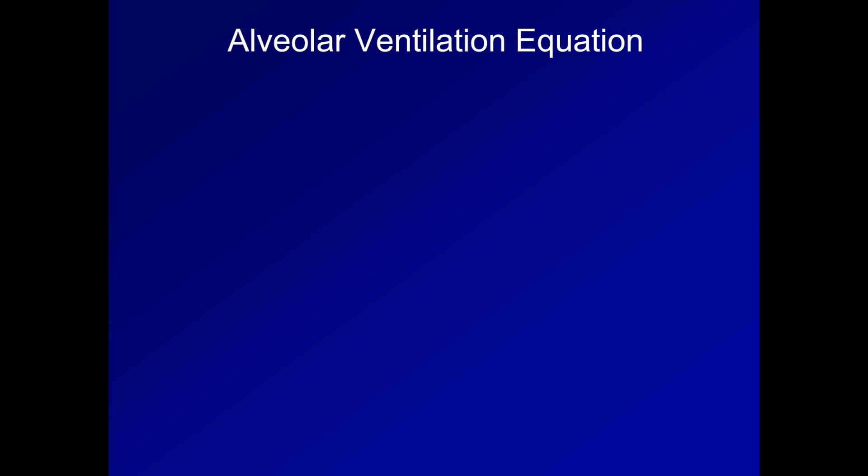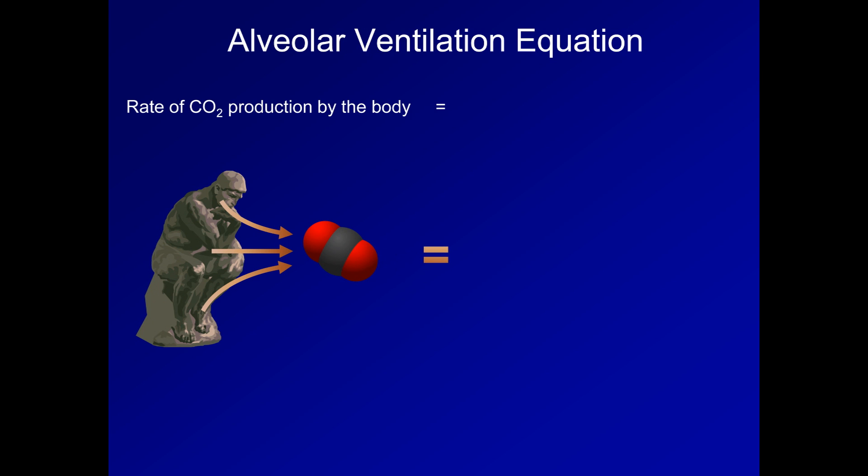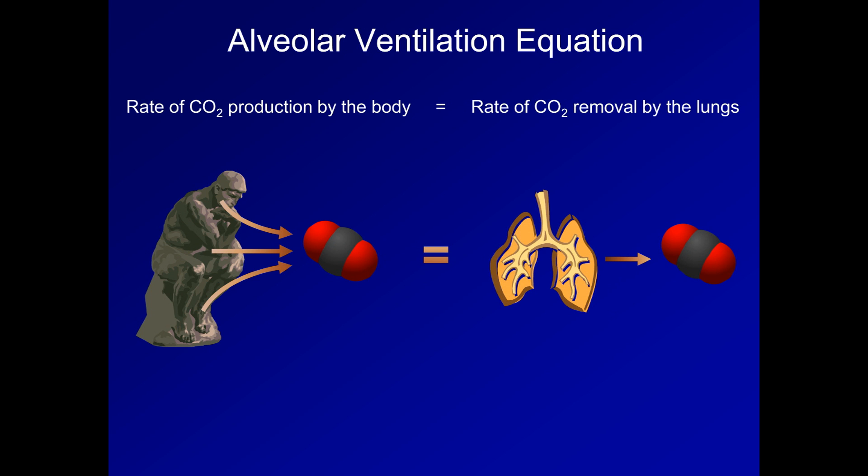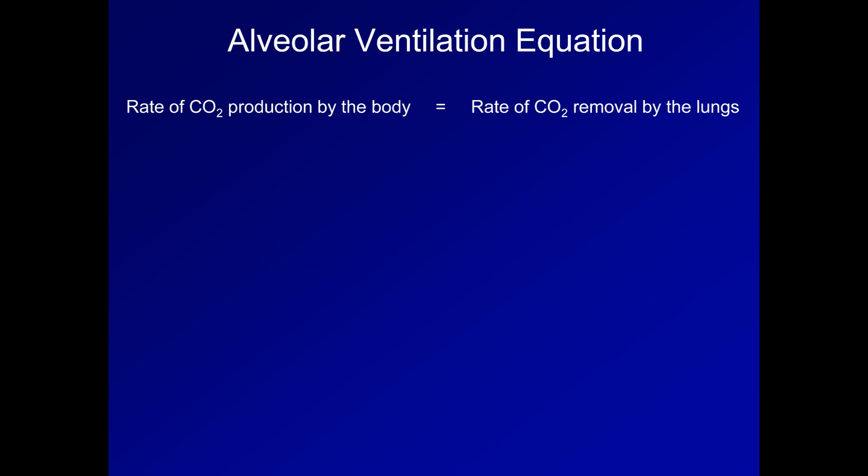So now let's talk about the alveolar ventilation equation, which allows one to calculate the partial pressure of CO2 in arterial blood as a function of barometric pressure in alveolar ventilation. As I already mentioned, this equation is based on the concentration of CO2. In other words, the rate of CO2 production by the body must equal the rate of CO2 elimination by the lungs. The rate of CO2 production is denoted as V dot CO2. In this case, the dot notation, sometimes referred to as Newton's notation, refers to the derivative as a function of time of whatever variable sits underneath the dot.